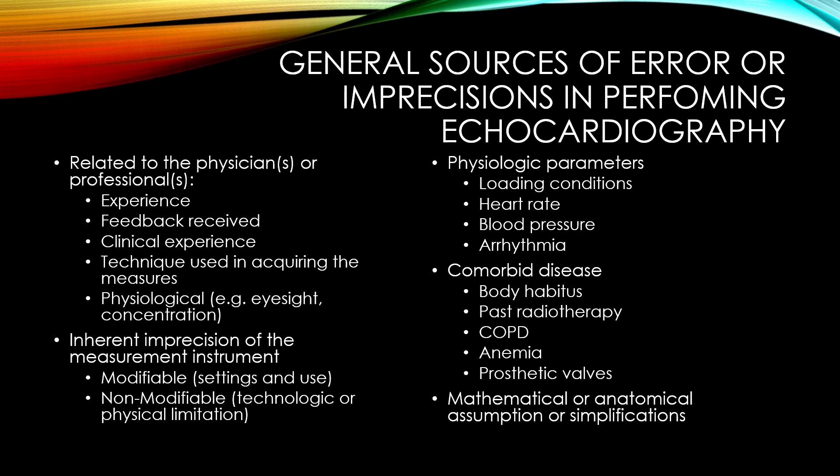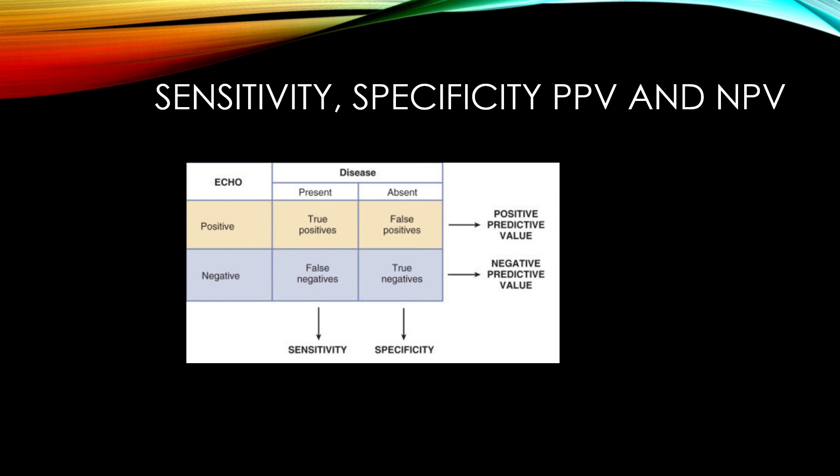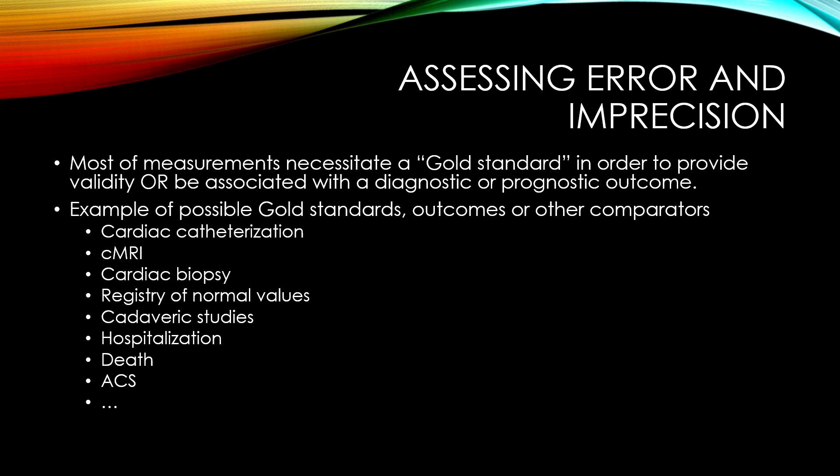Comorbid disease or patient characteristics may also be a source of error or imprecision, such as body habitus, past radiotherapy, COPD, anemia, and prosthetic valves. There can also be mathematical or anatomical assumptions and simplifications that are not always exact, which we must know and account for to give the most precise assessment possible. Let's review some general concepts about accuracy and precision so we are on the same page.